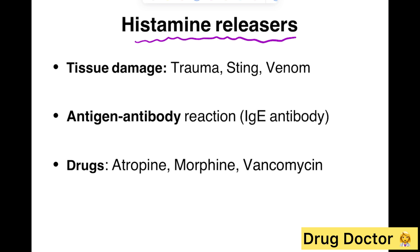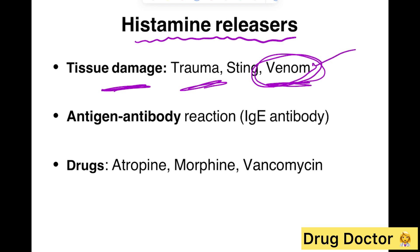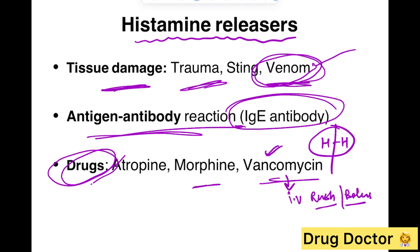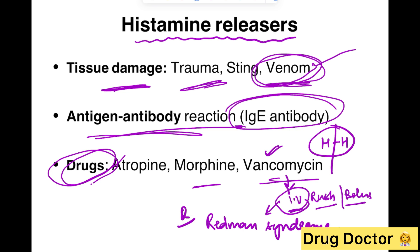Histamine release can occur through various triggers: tissue damage, trauma, insect bites, and snake venom. Antigen-antibody reactions also lead to histamine release. Certain drugs like morphine and vancomycin also promote histamine release — they displace the heparin-histamine bond inside cells, freeing histamine into circulation and leading to anaphylactoid reactions. If vancomycin is administered as a sudden IV bolus or rapid infusion, it causes Red Man Syndrome — sudden histamine release leading to flushing and the person's body turning red.